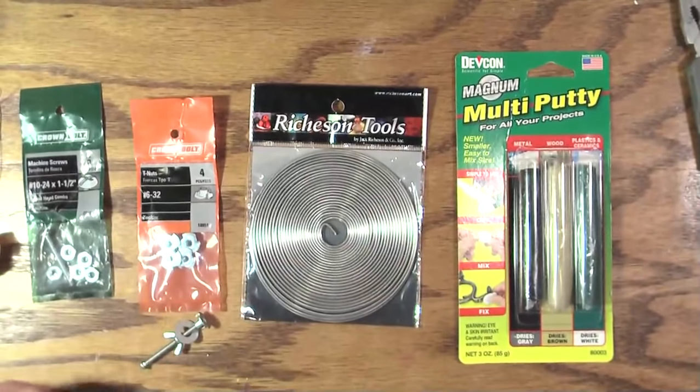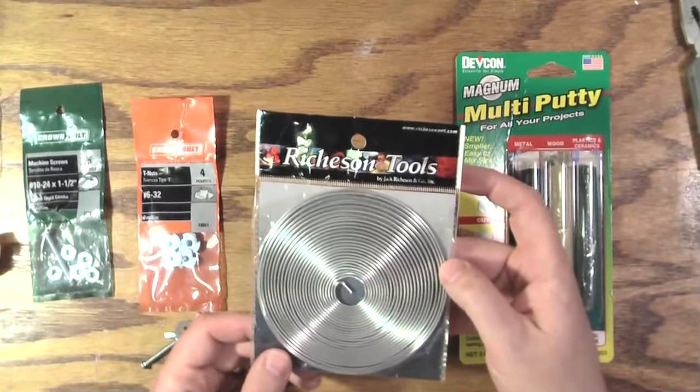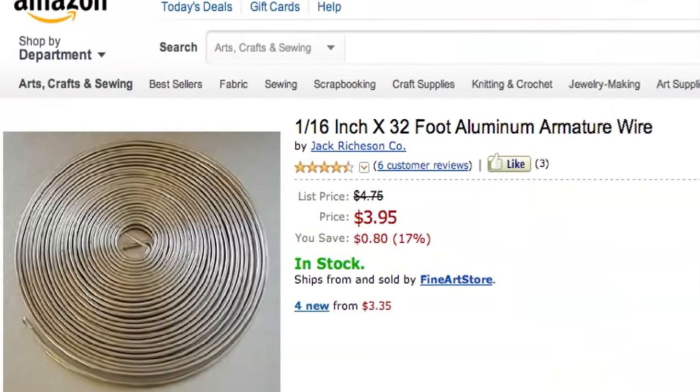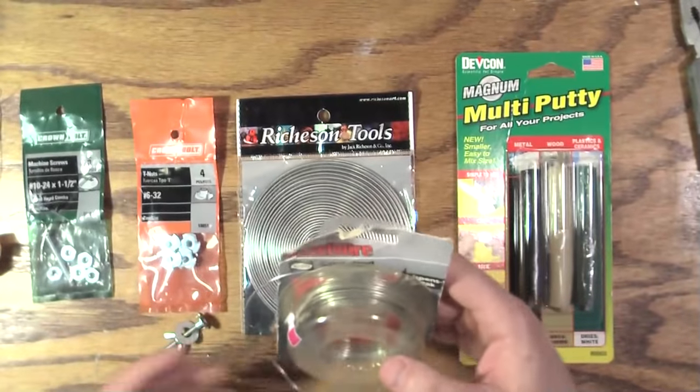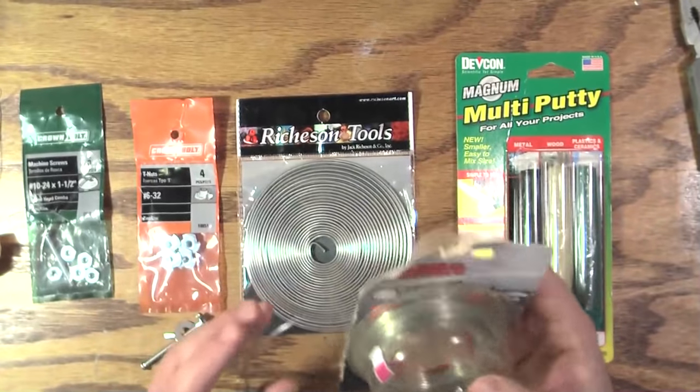So this is what you're shopping for. The main thing here is the armature wire, and you do want to get real aluminum armature wire. Don't be tempted by the wire you're seeing in the hardware store, like steel wire, because it can be next to impossible to animate.